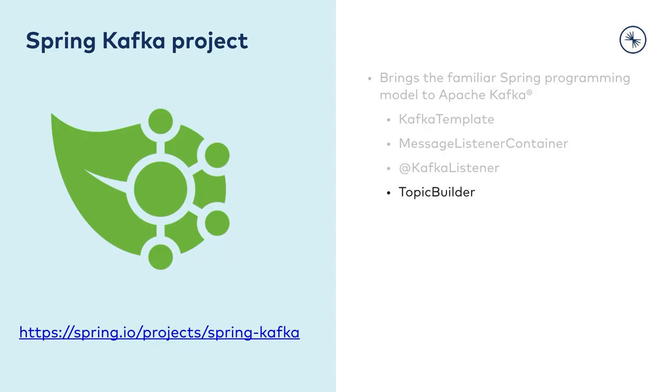Many things people want to do with Kafka involve using the admin API and manipulating topic configuration. Spring also simplifies how you can define your topics — you simply define a bean of type NewTopic and use a topic builder to create the Kafka topic in a nice and concise fashion.